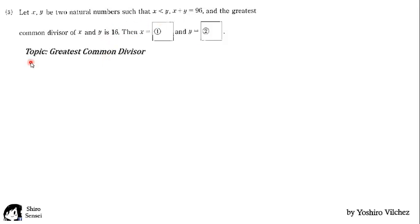If the gcd of x and y is 16, we can rewrite x and y as 16a and 16b respectively, where a and b are coprimes or in other words their gcd is 1. And since the problem says x is less than y, so a is less than b.